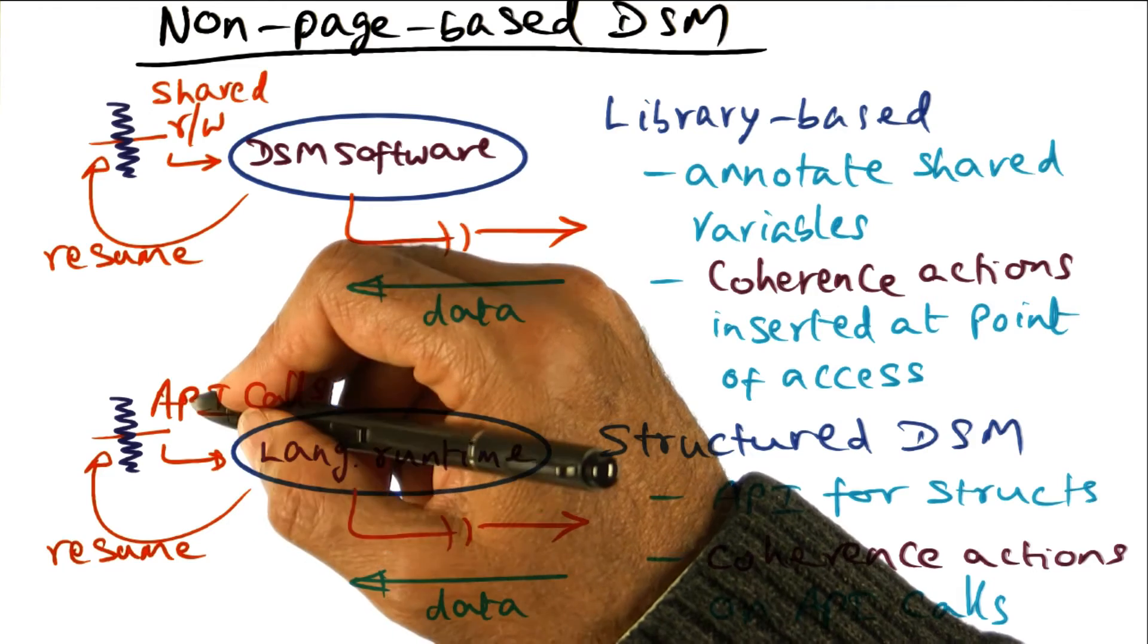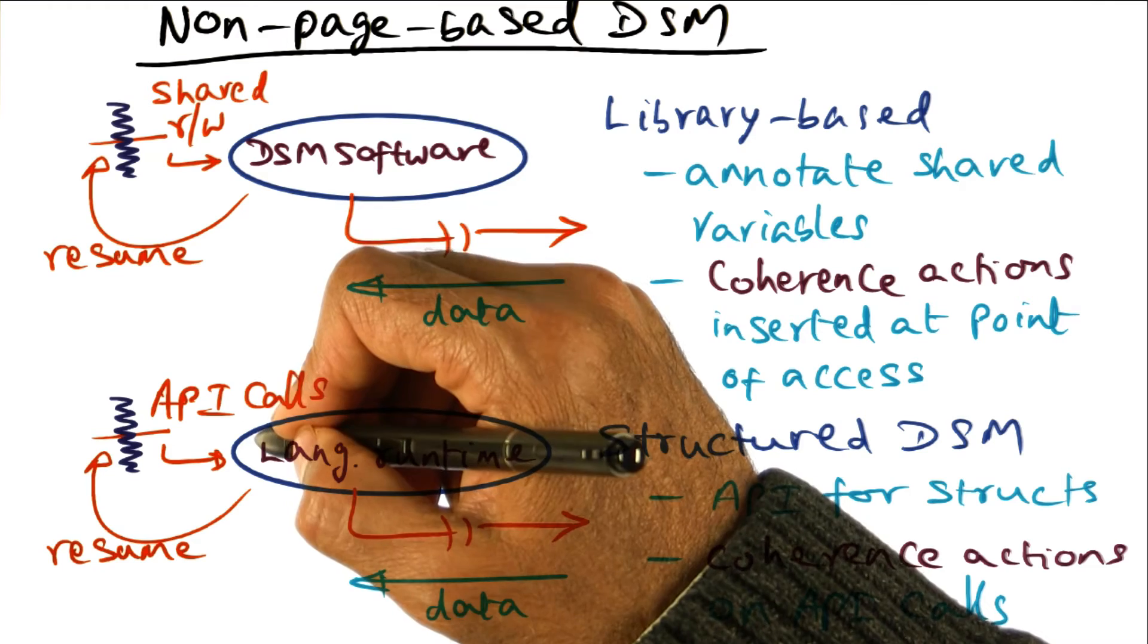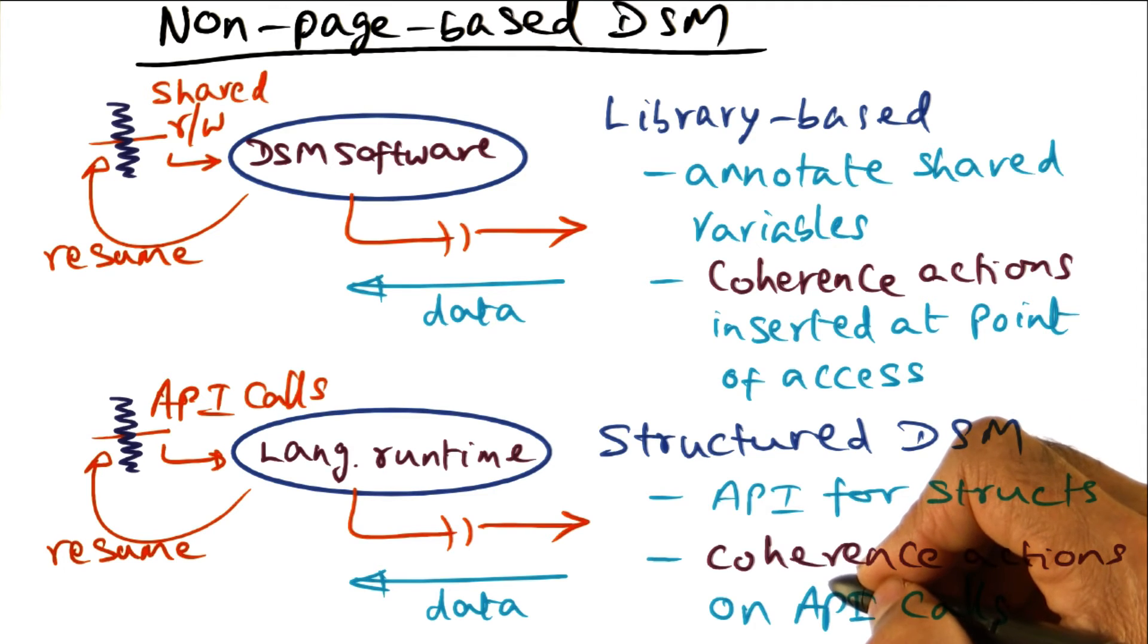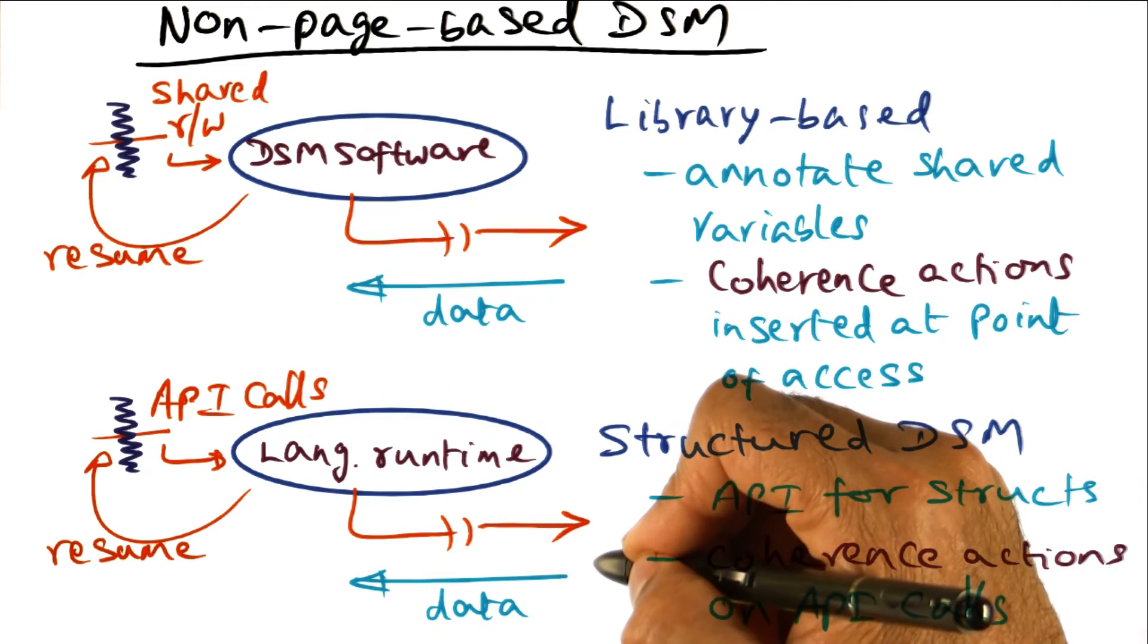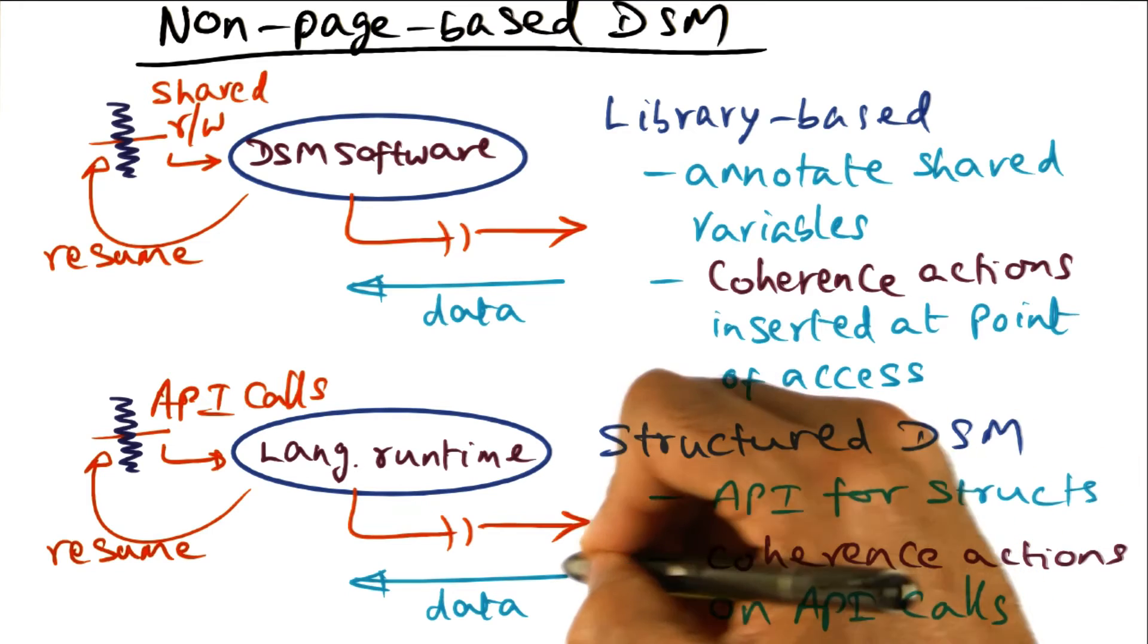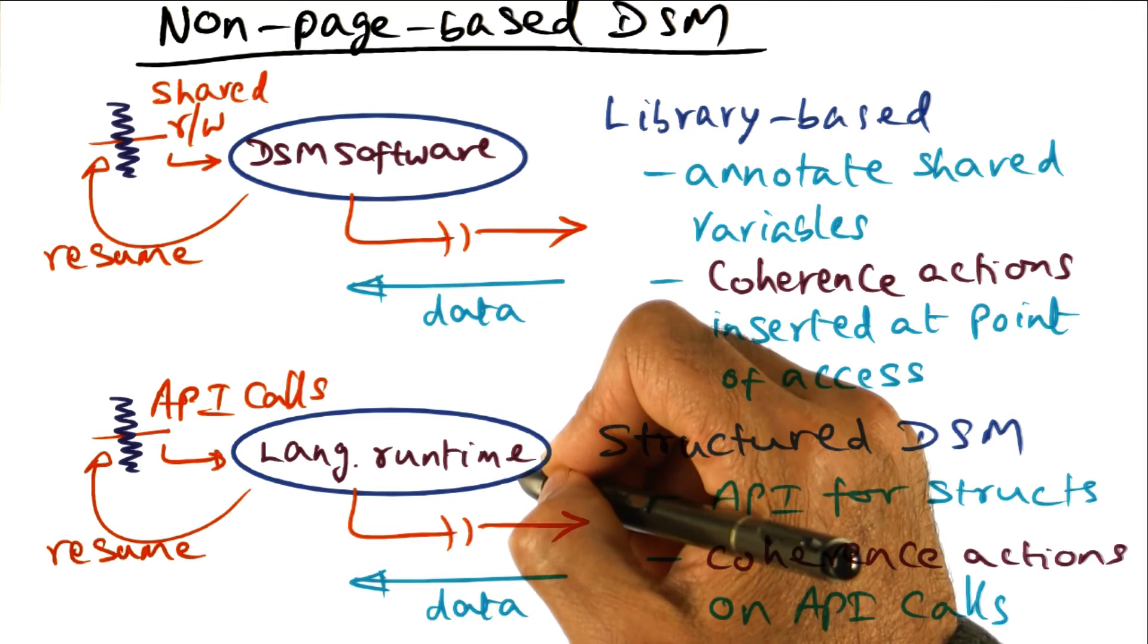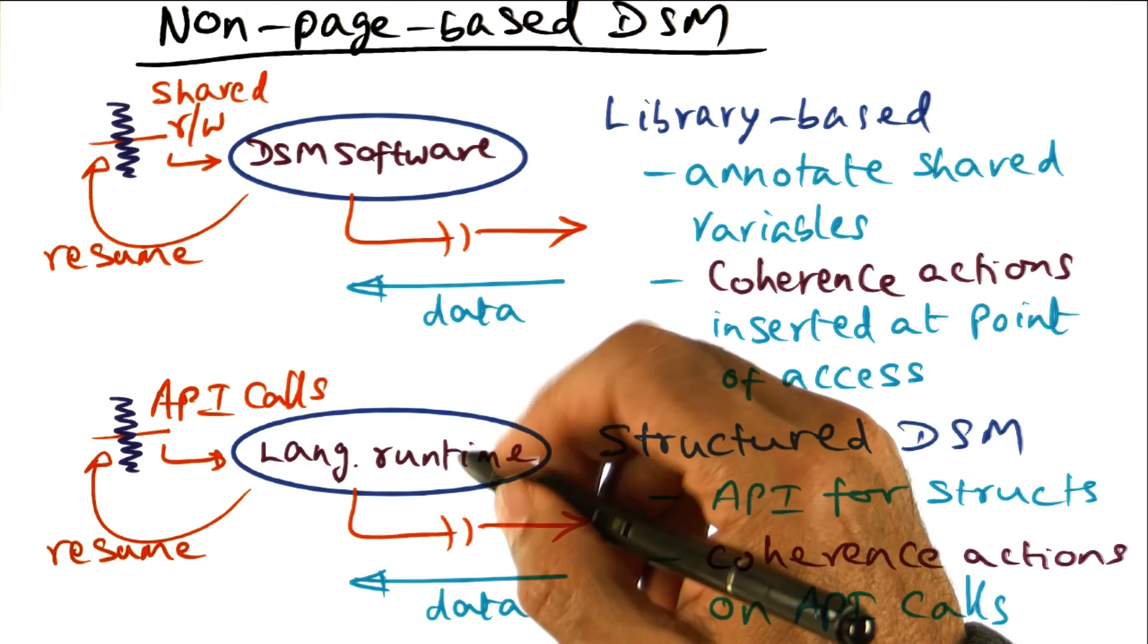When the application makes an API call, the language runtime gets into gear and says, what coherence actions do I need to make in order to satisfy this API call? All of those coherence actions are going to be taken at the point of the API call, and that might include fetching data from a remote node in the cluster, and once the semantics of the API call has been executed by the language runtime, then it's going to resume this thread that made the call in the first place.